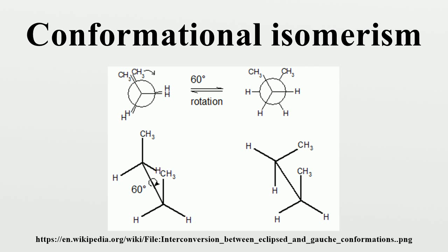Conformational analysis is useful for understanding the stability of different isomers, for example by taking into account the spatial orientation and through-space interactions of substituents. In addition, conformational analysis can be used to predict and explain product selectivity, mechanisms, and rate of reactions.